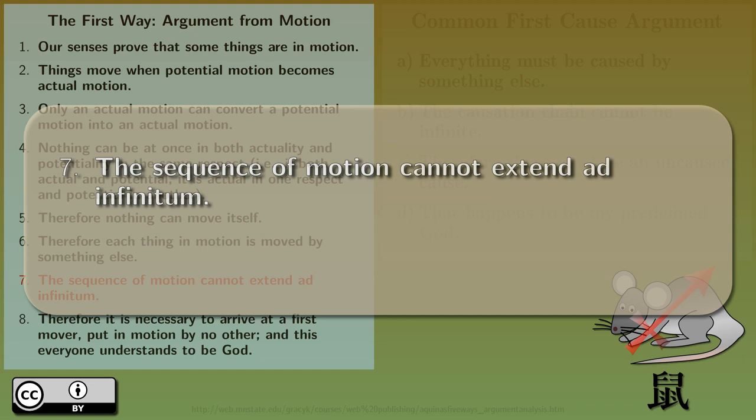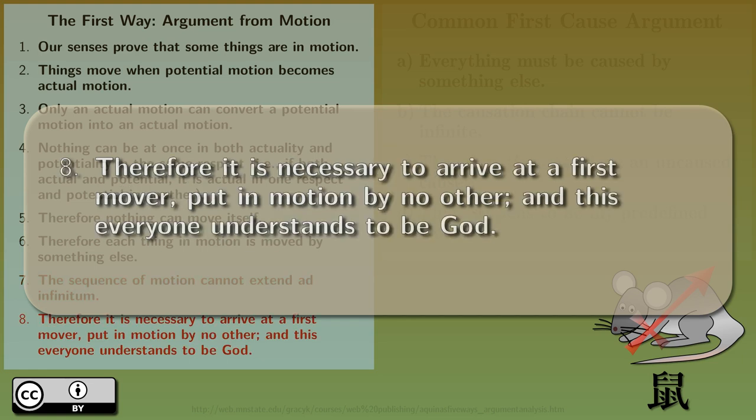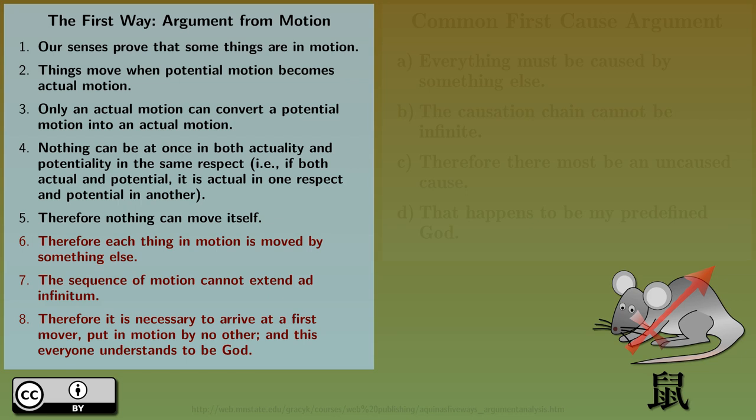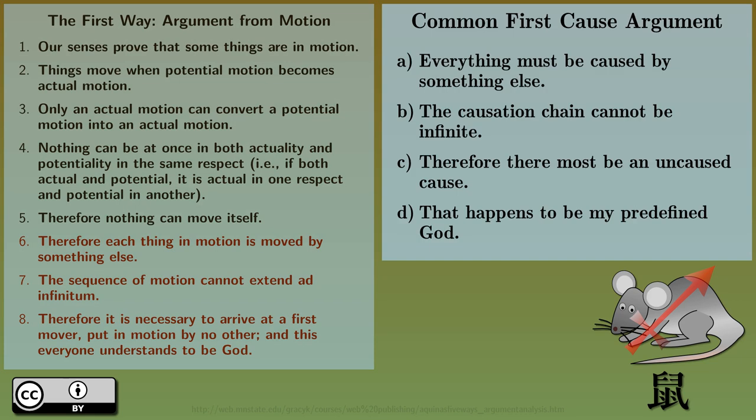The sequence of motion cannot extend ad infinitum. Therefore, it is necessary to arrive at a first mover, put in motion by no other, and this everyone understands to be God. I will move right into the conclusion, which is what I find common in all cosmological or first-cause arguments.